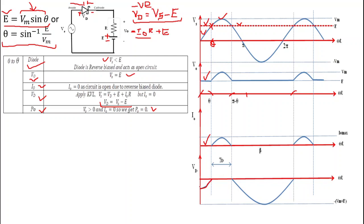At ωt equals 0, VS equals 0, so Vd equals VS minus E equals minus E. Therefore this point on the waveform is minus E. At angle θ, VS equals E, so the drop across the diode is 0.